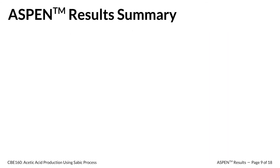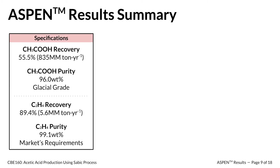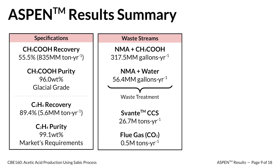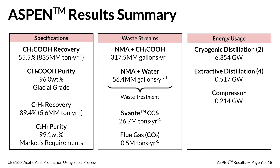Based on these process design decisions, we simulated the process using Aspen software. The model achieves high purity and somewhat high recovery for both acetic acid and ethylene using cryogenic and extractive distillation. Unfortunately, our process generates significant liquid waste costs and carbon emissions, which will be accounted for in our economic analysis. The cryogenic distillation columns are very energy intensive; however, we are hopeful that implementing heat exchangers and generating steam from the reactor will alleviate these energy costs.